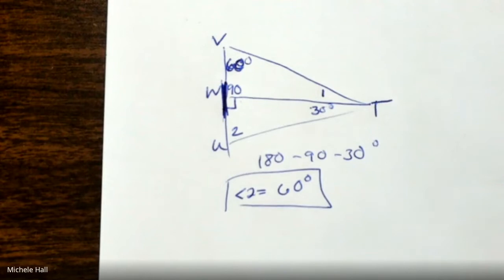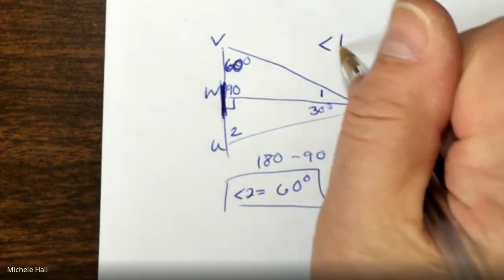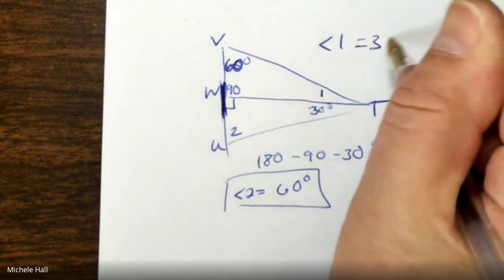We know two of the angles. This is actually a good review for the midterm — always looking for linear pairs that add up to 180, looking for vertical angles, looking for complements and supplements. So angle 1 equals 30 degrees.